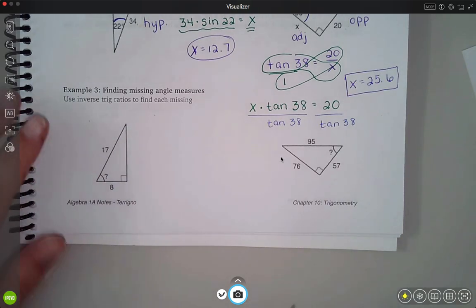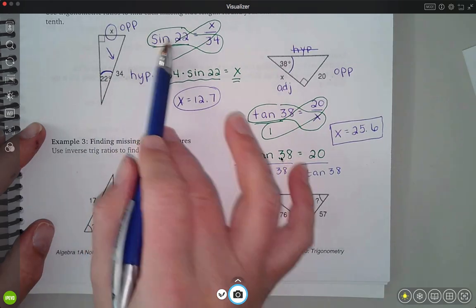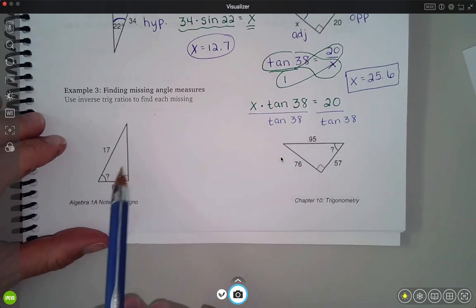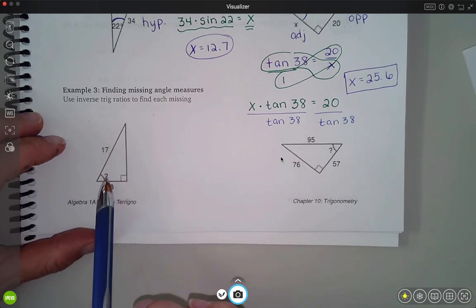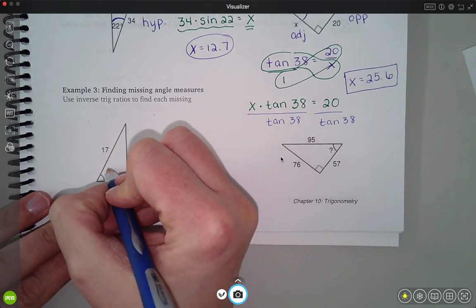You'll notice up in example two, we knew what the angle measure was, and then we used the trig function to find the side length that we didn't know. In this one, I know the two side lengths, but I don't know what the angle is. So we're going to call this x.